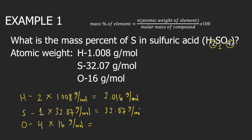And if you total these, this is equal to 98.086 grams per mole. So this is the molar mass of sulfuric acid.